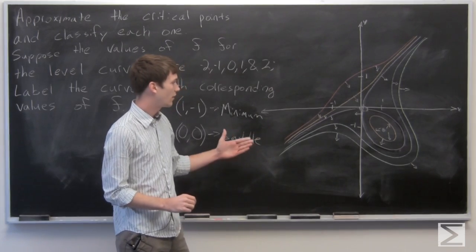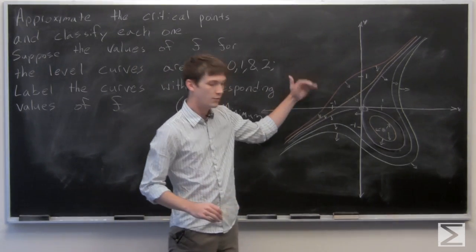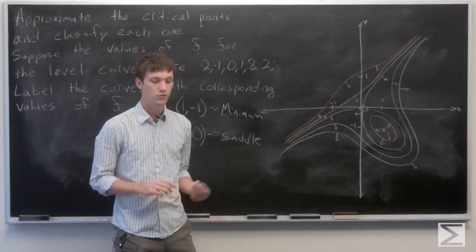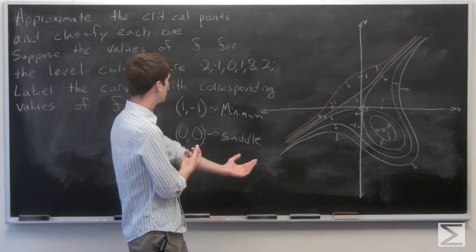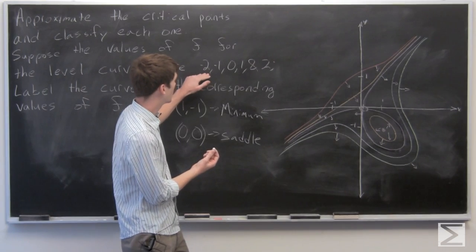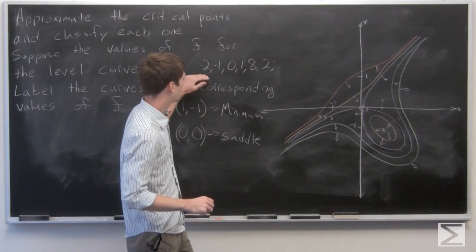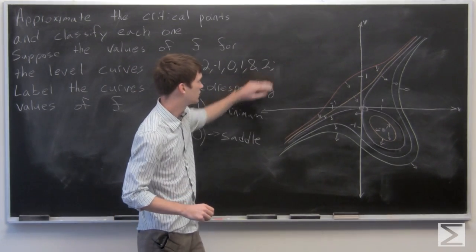Since we know that the gradient vectors are going to be pointing in the direction in which f increases, we can use that to our advantage in labeling these. So we want negative 2, we want it to point from negative 2 to 2.